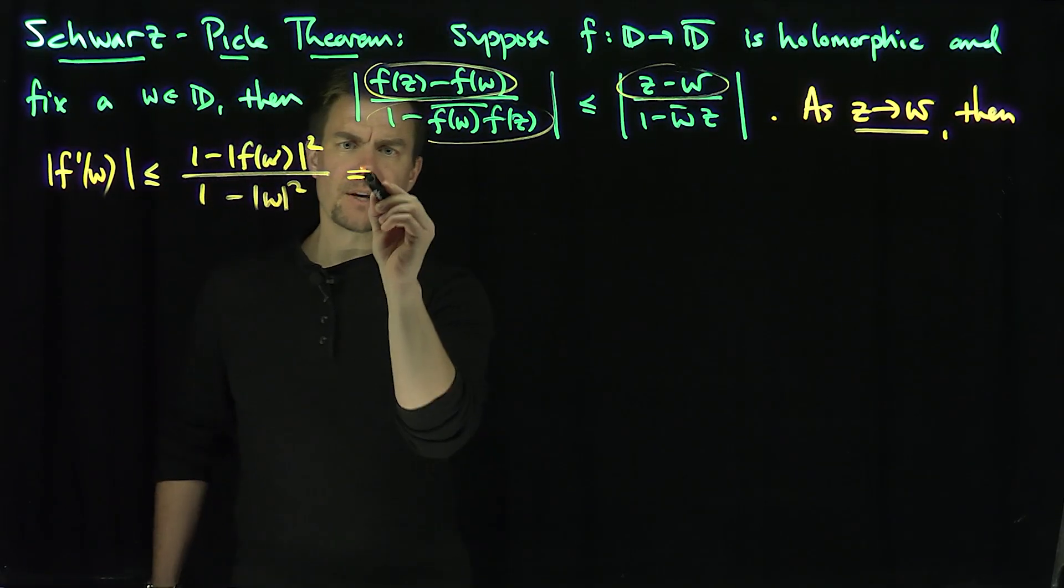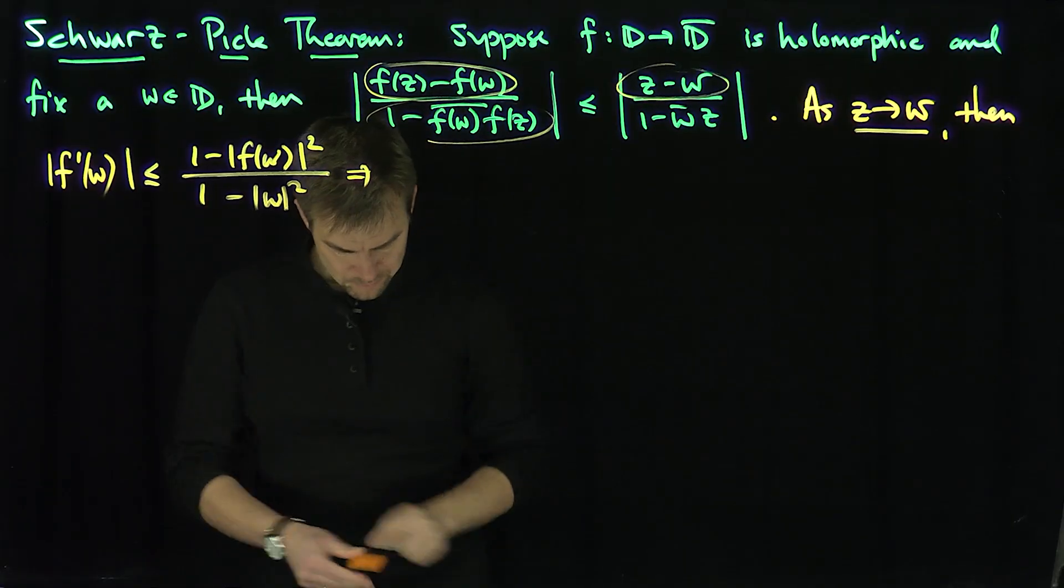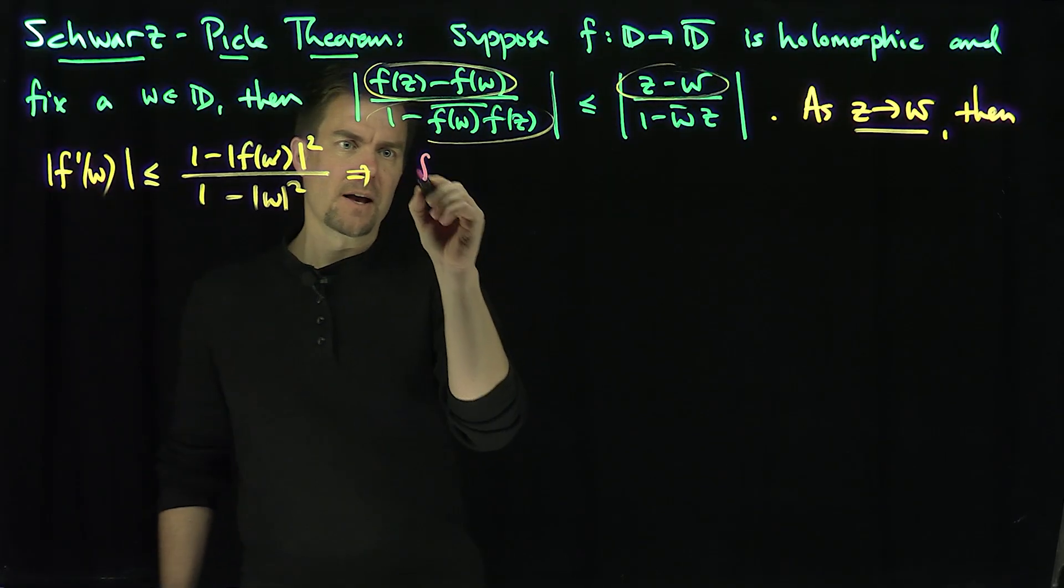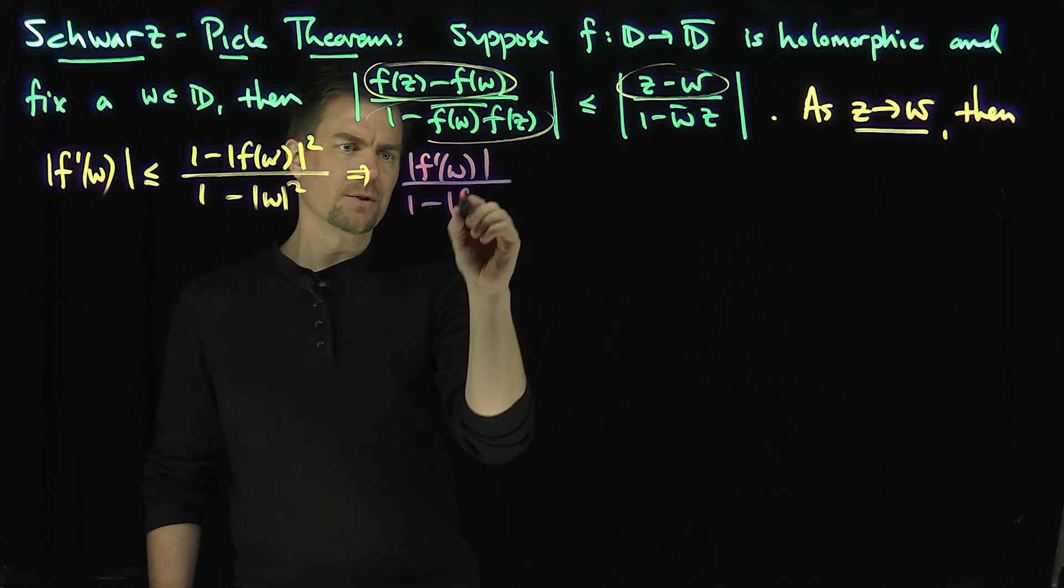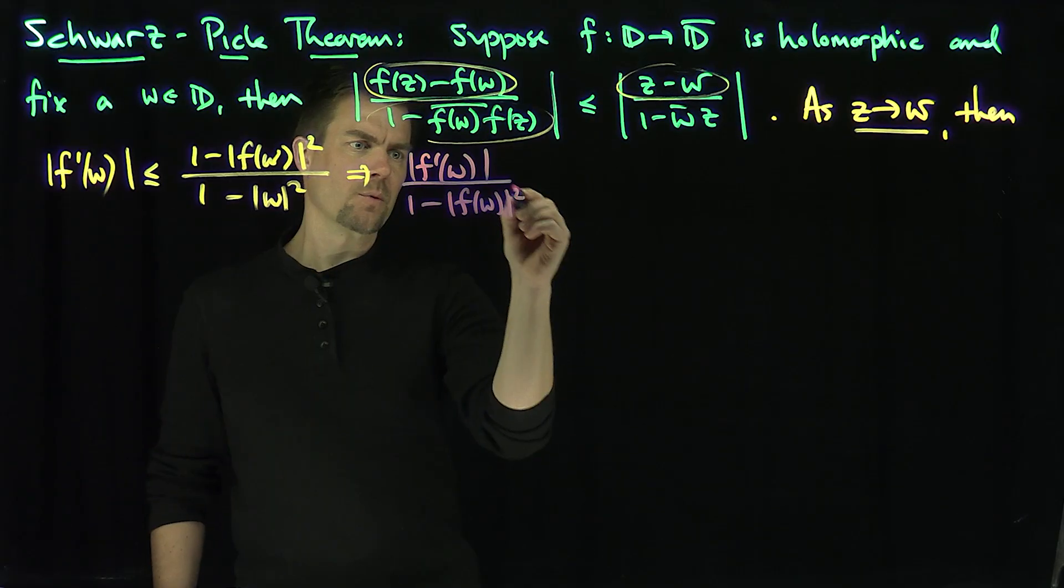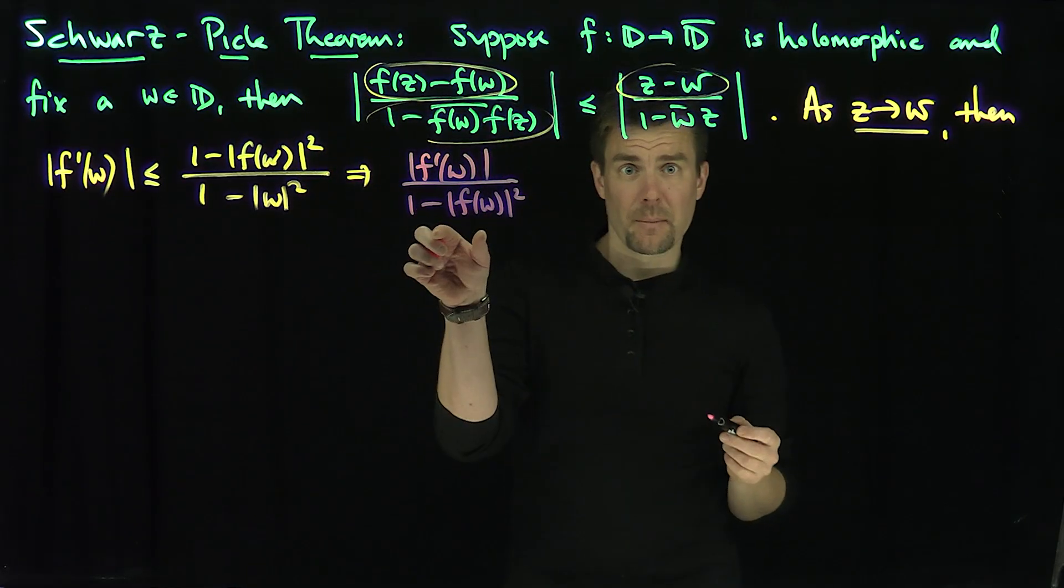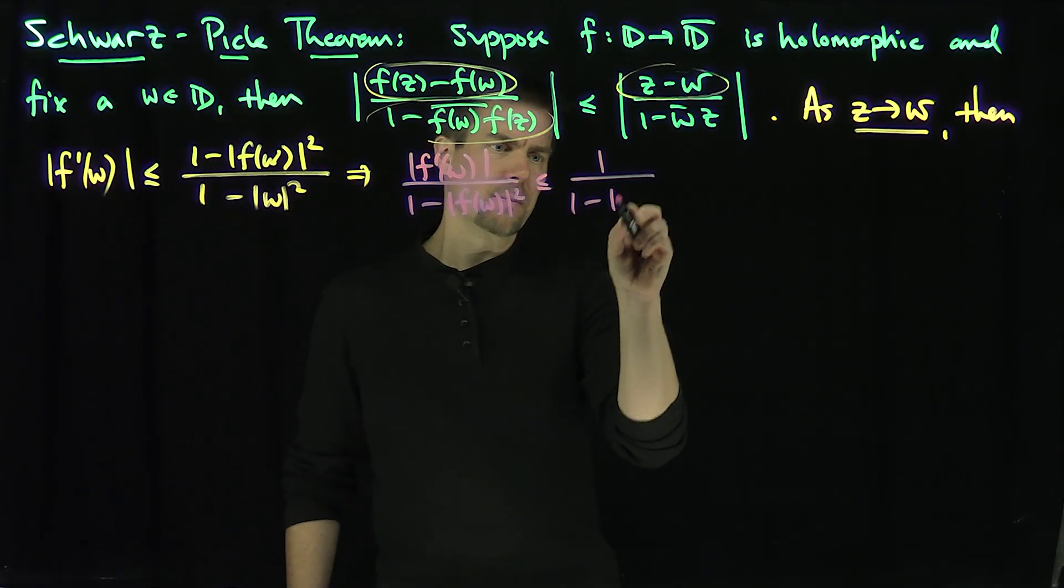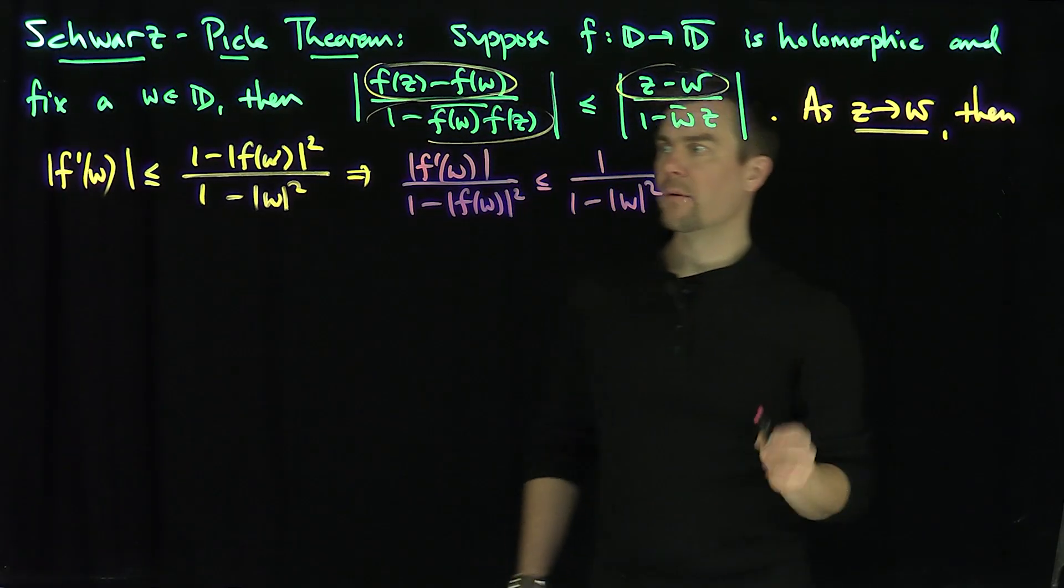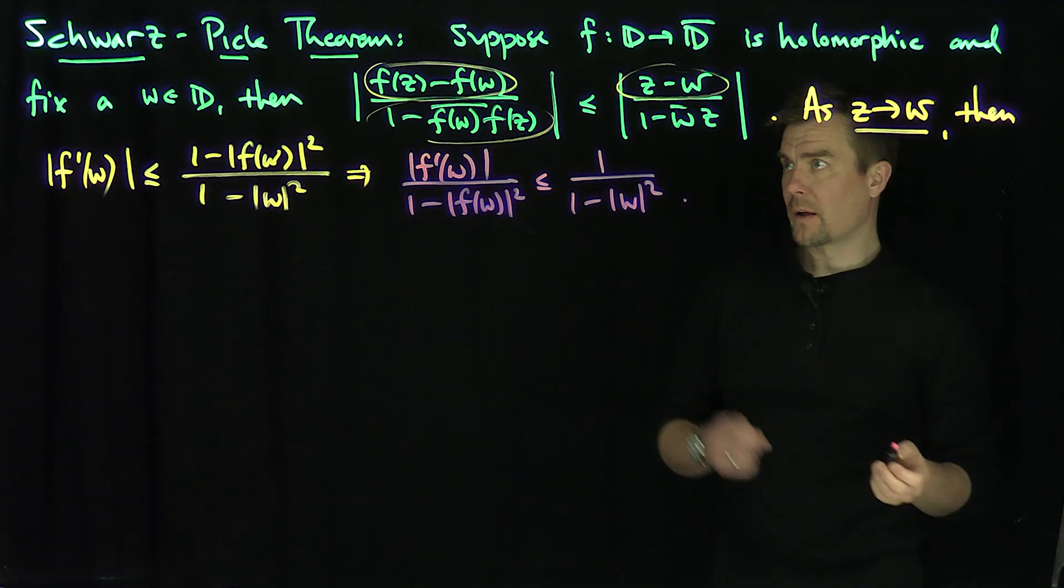And oftentimes you're going to see it written in this more compact way: f prime of w over 1 minus modulus f(w) squared less than or equal to 1 over 1 minus modulus of w squared. That's the Schwartz-Pick theorem.